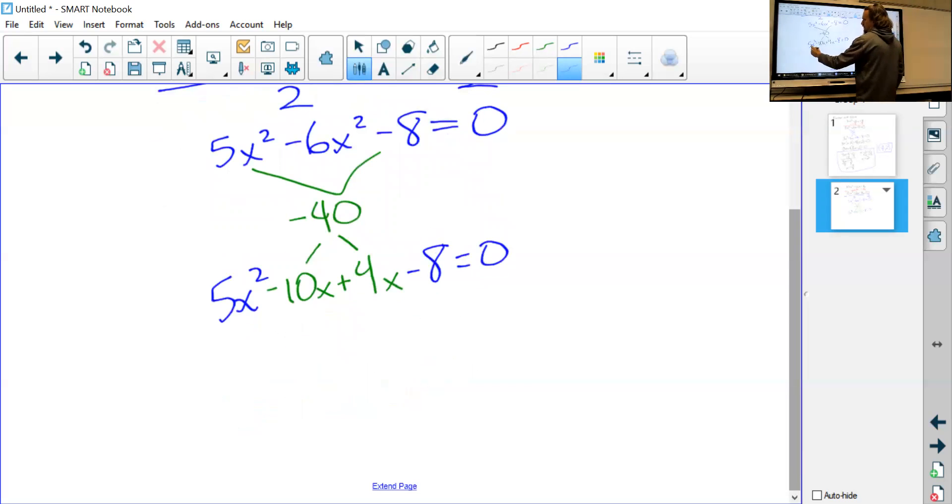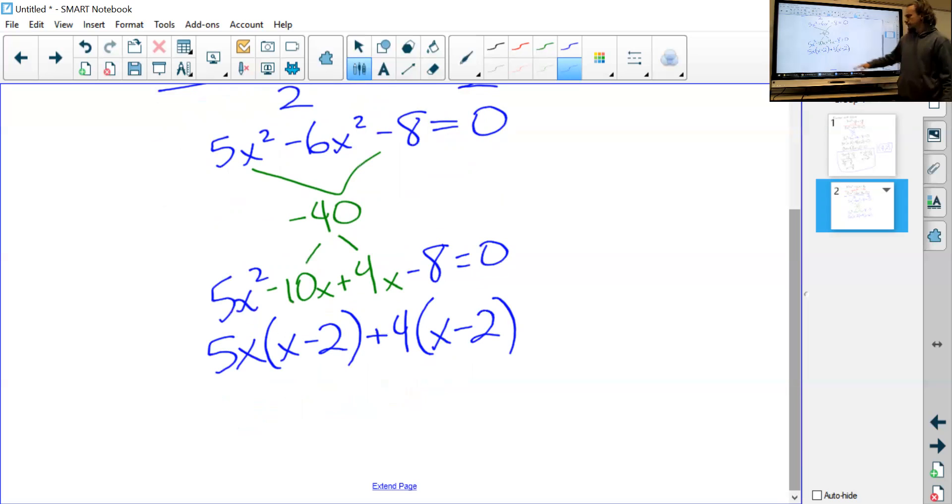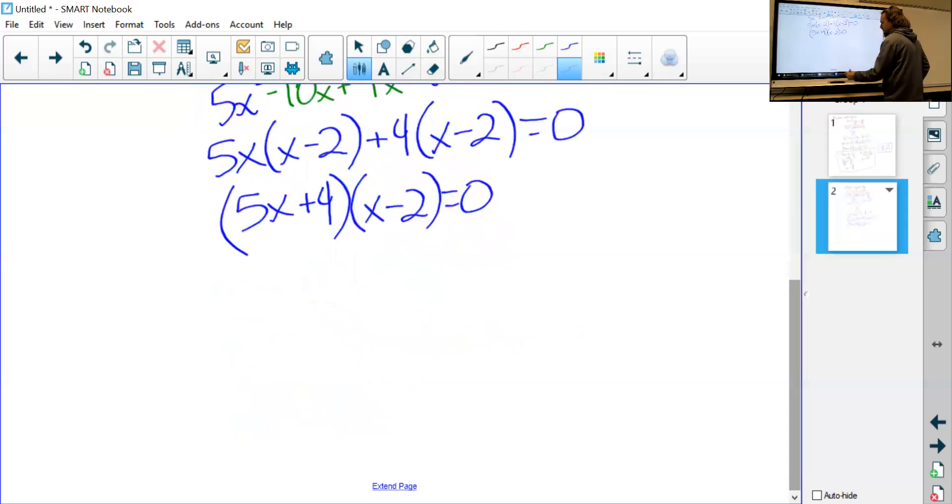We factor it. I can factor out a 5x, that leaves me x - 2. I can factor out a 4, so that leaves me x - 2. Perfect. Remember, rules haven't changed—we're still looking for the same quantity on both sides. Not equal zero. So I can rewrite this as (5x + 4)(x - 2) = 0.